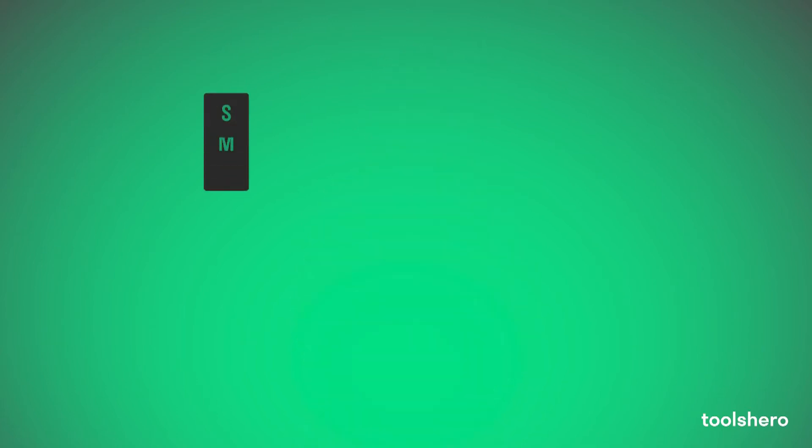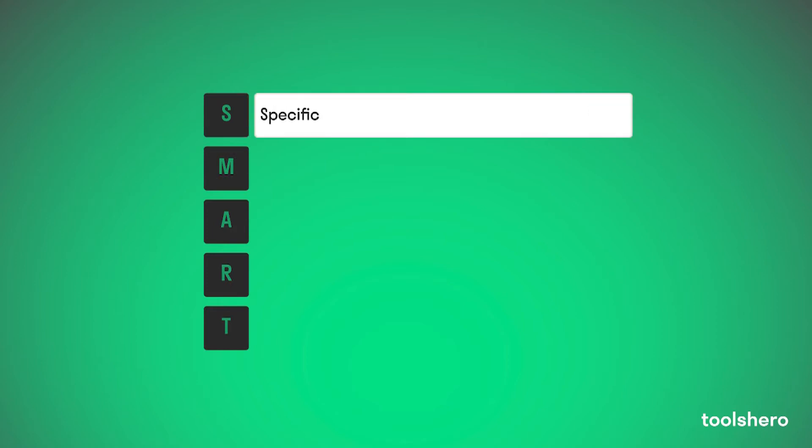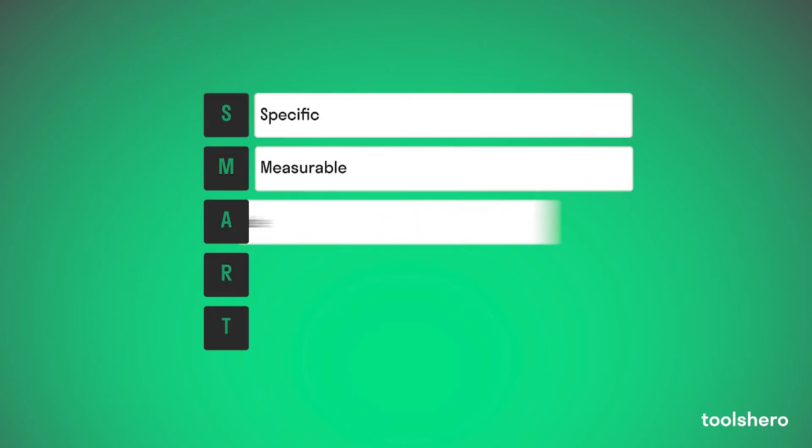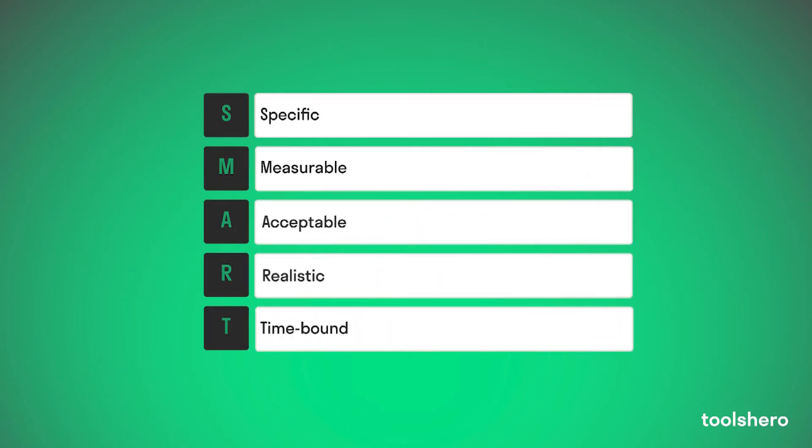A SMART goal gives direction to what you want to achieve. With this sense of direction, it is highly likely that a goal can be completed successfully. The acronym SMART stands for Specific, Measurable, Acceptable, Realistic, and Time-bound. Let's dive into these letters.